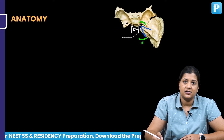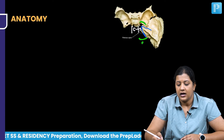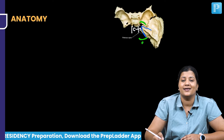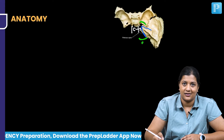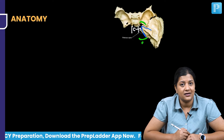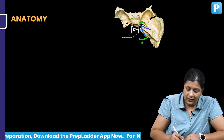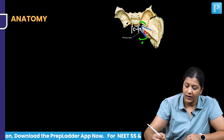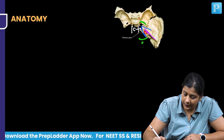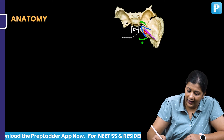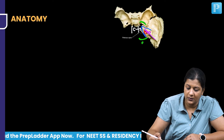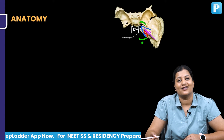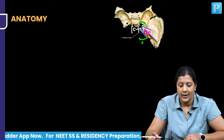The petrous bone has a superior surface and a posterior surface. An important structure for otologists is the canal on the posterior surface — the internal auditory meatus. The surface anterior to the superior border is the superior surface, and the surface where the internal auditory canal is located is called the posterior surface.